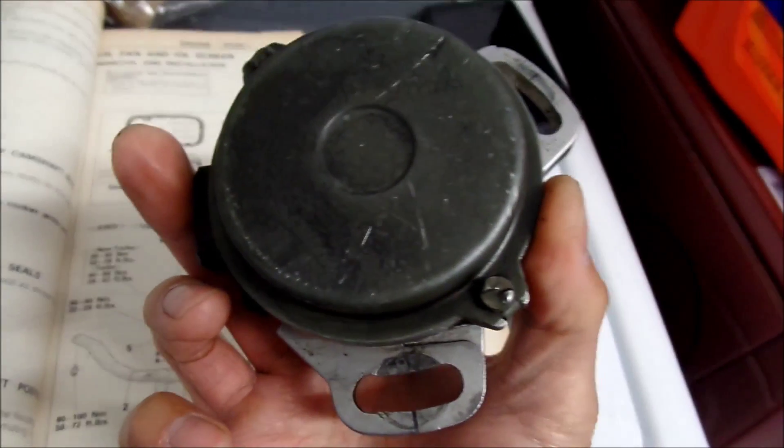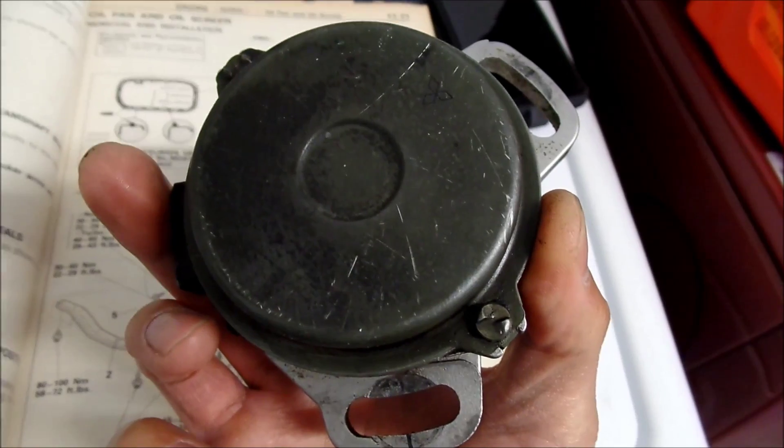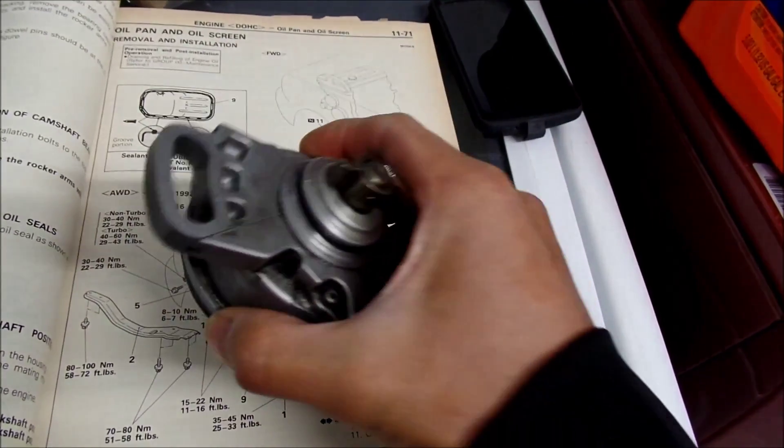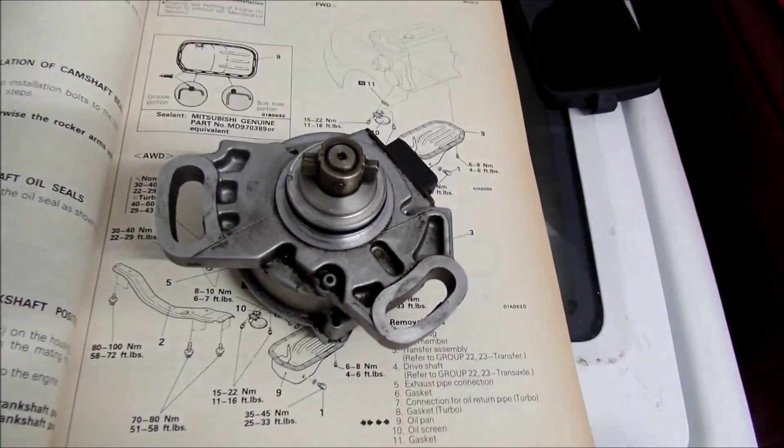That's for your, it's called a crankshaft position sensor. This is the one that goes on the intake cam of your Gallant VR4.